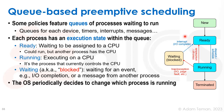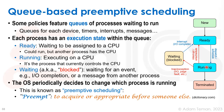The operating system can periodically decide to change which process is running. It calls an interrupt, unschedules the currently running process, puts it back on the ready queue, and dispatches a different process. This is called preemptive scheduling. 'Preempt' means to acquire or appropriate before someone else — the OS, according to its policy, will stop whatever is hogging resources, unschedule it, and put the next highest priority ready process onto the CPU. Virtually every operating system today uses some form of preemptive scheduling.